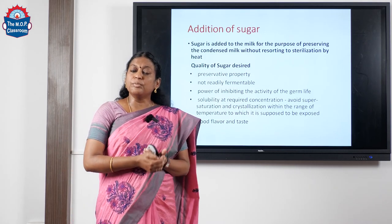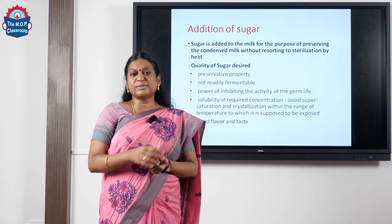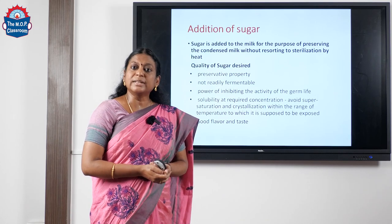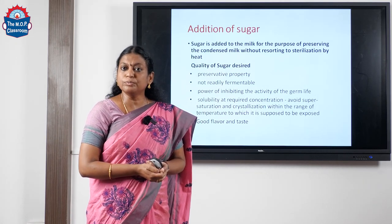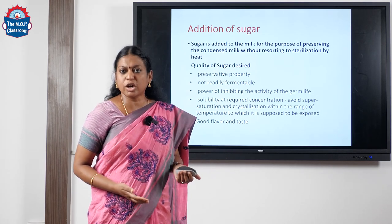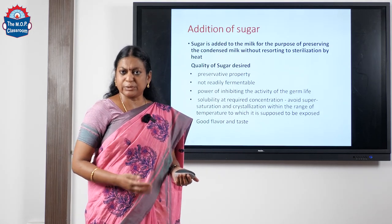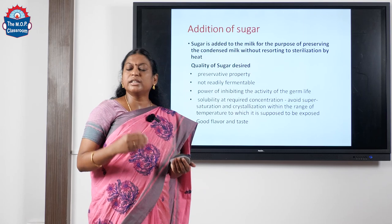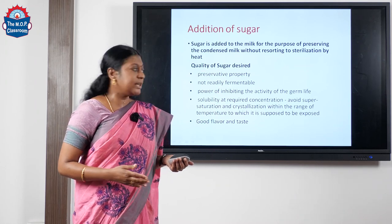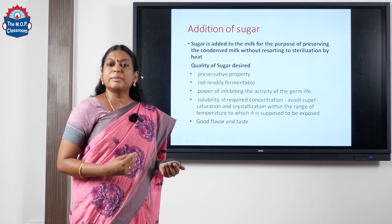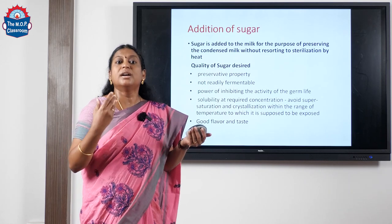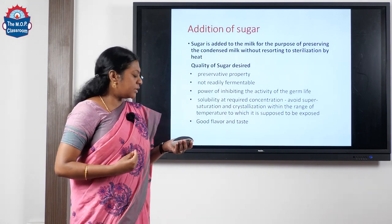Now moving on to the very important step — addition of sugar. We add sugar as a means of preservation. Sugar binds with water, making water unavailable for microorganisms — that is why we use sugar as a preservative. The quality of sugar required is that it should have a preservative property, should not get fermented, should inhibit the growth of microorganisms, and the flavor should be pleasant and admirable to consumers.